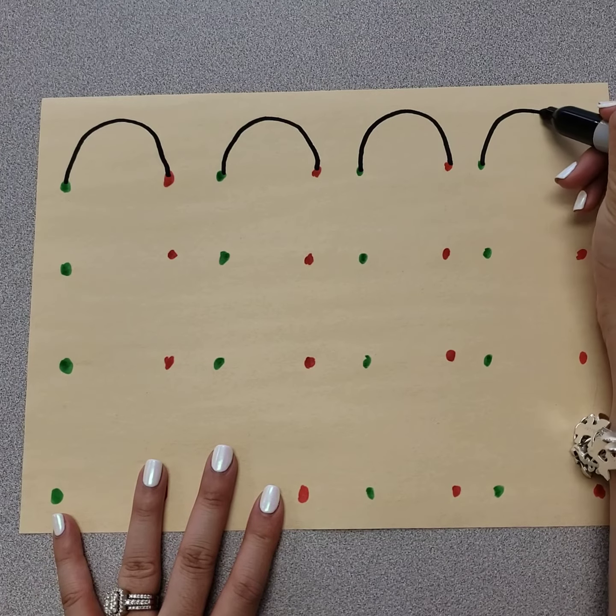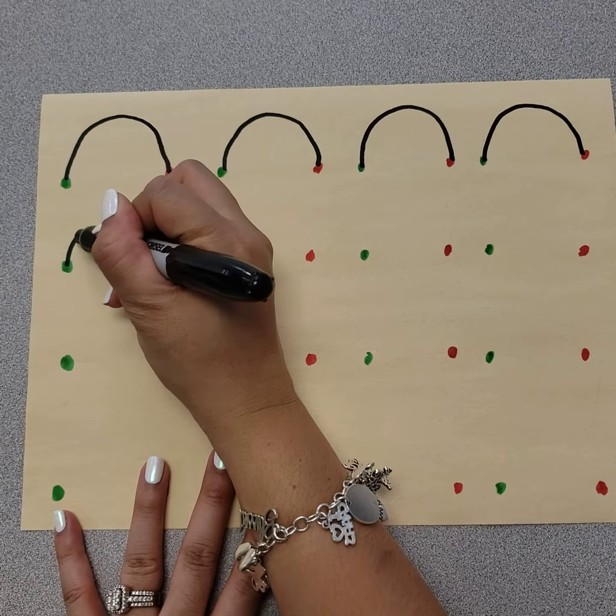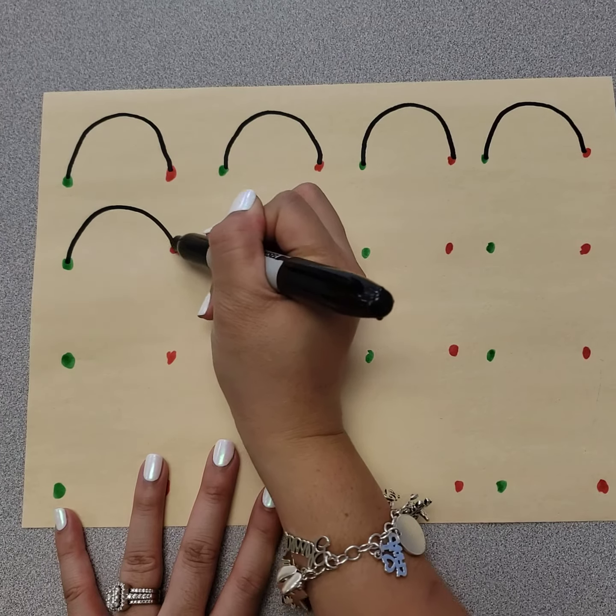Green, up and over, red. Start here. Green, up and over, red.